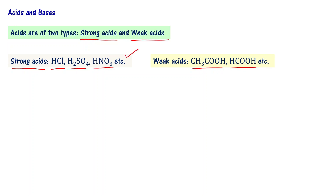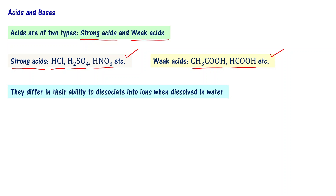So what differentiates them? The major differentiating factor between weak acids and strong acids is their ability to dissociate into ions when dissolved in water. For example, HCl and acetic acid (CH3COOH) — when dissolved in water — differ in the degree of dissociation into ions.